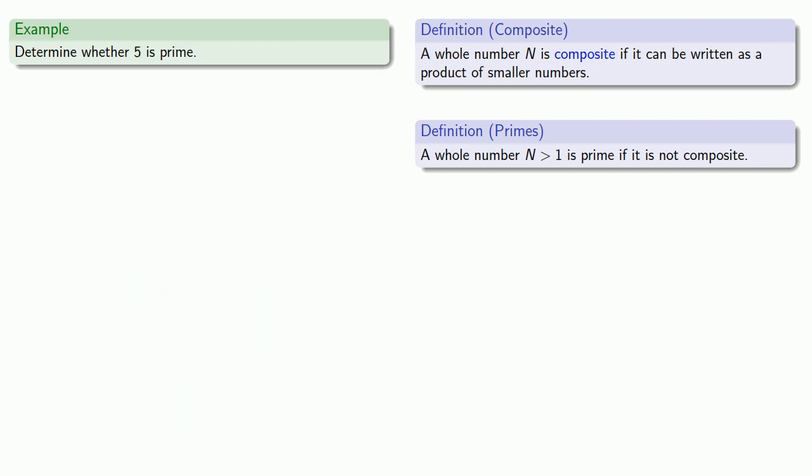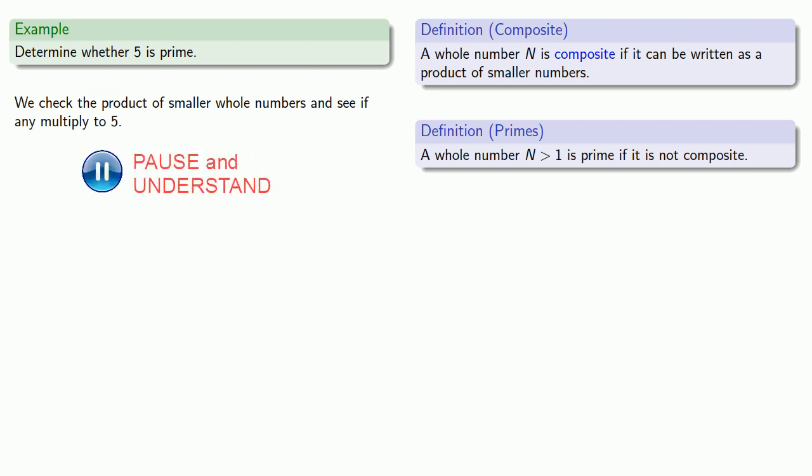Let's determine whether 5 is prime. So with 100, it was actually pretty easy because it didn't take us a lot of effort to come up with two smaller numbers that multiplied to 100. But 5 is a little bit more difficult. We have to check the product of smaller whole numbers and see if any of them multiply to 5. So the numbers smaller than 5 are 1, 2, 3, and 4. So we have to check every possible product of these numbers.